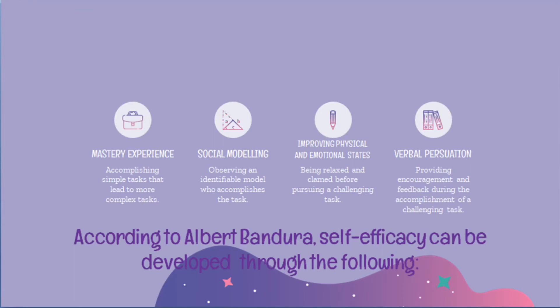First, master experience by accomplishing simple tasks that lead to more complex tasks. Second, social modeling by observing an identifiable model who accomplishes the tasks. Third, improving physical and emotional states by being relaxed and calm before pursuing a challenging task. And fourth, verbal persuasion by providing encouragement and feedback during the accomplishment of a challenging task. An example would be a learner doing a particularly challenging writing assignment: if the learner already has experience in similar tasks, looks up to a mentor, allows sufficient time for the tasks, and is constantly encouraged, he or she will probably have high self-efficacy. On the other hand, a learner with no prior experience in writing, no model to look up to, who is always stressed and pressured by the deadline, and receives no positive feedback, is likely to have low self-efficacy in writing.